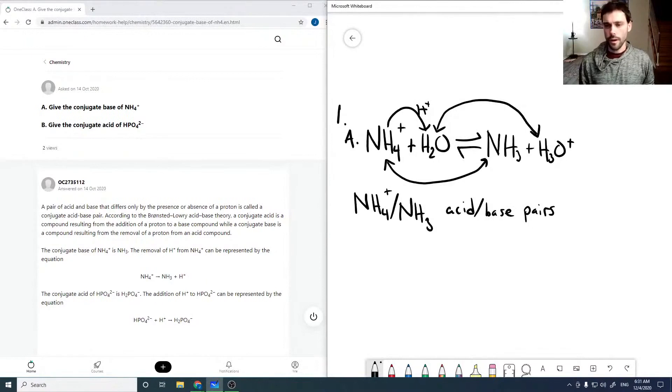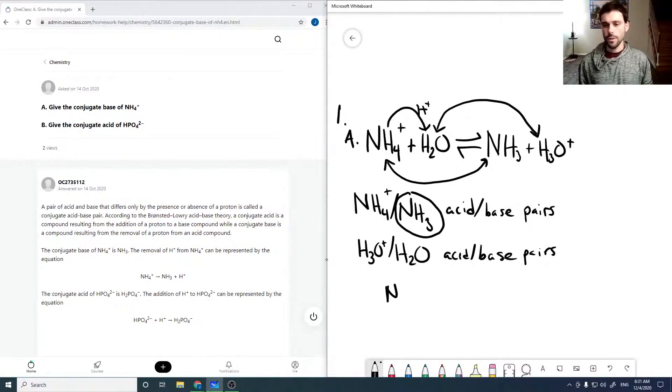And H3O+ and H2O are acid-base pairs. So to answer the question, the conjugate base of NH4+ is just NH3. NH3 is the conjugate base.